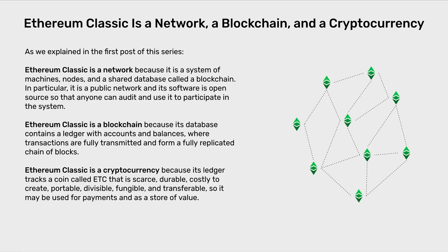Ethereum Classic is a blockchain because its database contains a ledger with accounts and balances where transactions are fully transmitted and form a fully replicated chain of blocks. Ethereum Classic is a cryptocurrency because its ledger tracks a coin called ETC that is scarce, durable, costly to create, portable, divisible, fungible and transferable, so it may be used for payments and as a store of value.